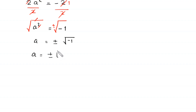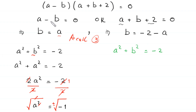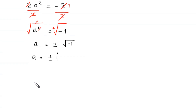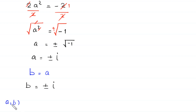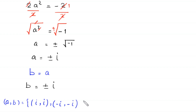Since the square root of negative 1 is i, we get a equals plus or minus i. Since b equals a, b also equals plus or minus i. This gives two solution pairs: (a, b) equals (i, i) and (a, b) equals (negative i, negative i).